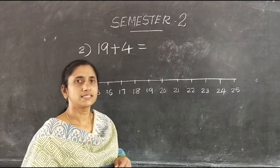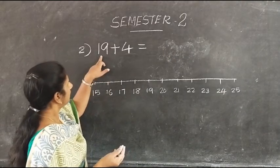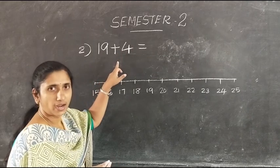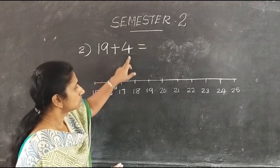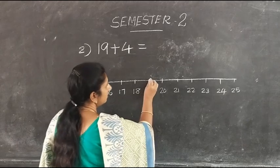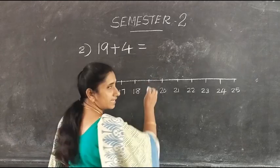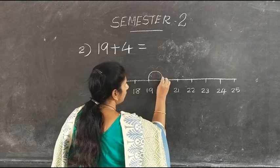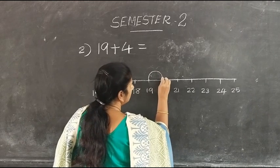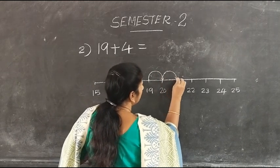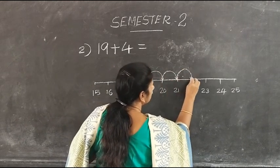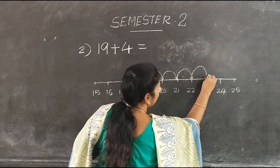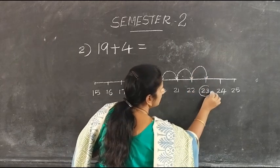Let us see another example: 19 plus 4. Here we have to add 19 and 4. So we have to start from 19 and take 4 jumps in a forward direction. 1, 2, 3, 4.